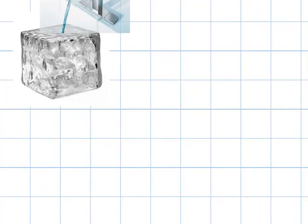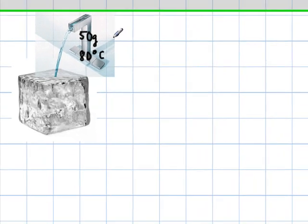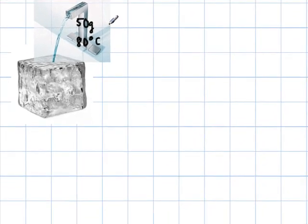Chapter 17 problem 4. A 50 grams of hot water at 80 degrees Celsius, so 50 grams of hot water, 80 degrees Celsius is around 180-175 Fahrenheit, is poured into a cavity in a very large block of ice at zero degrees Celsius.